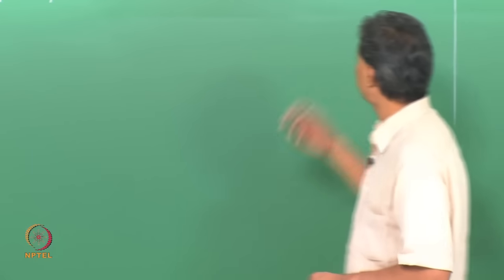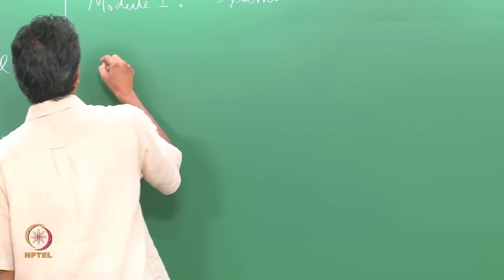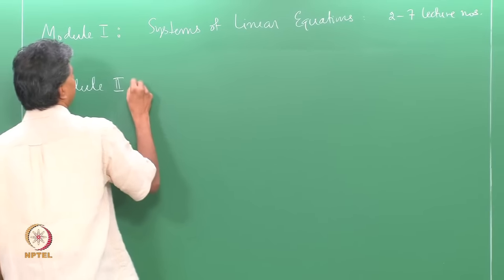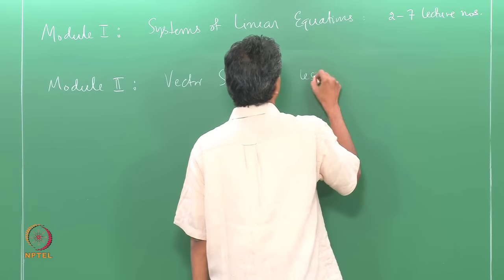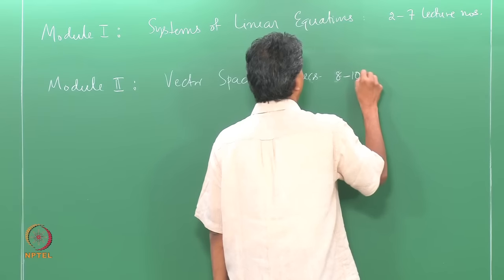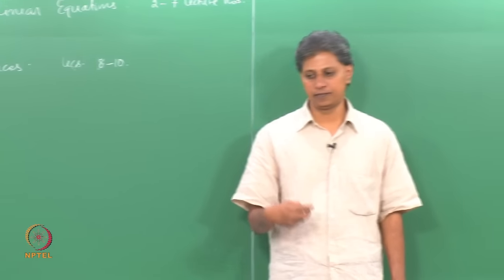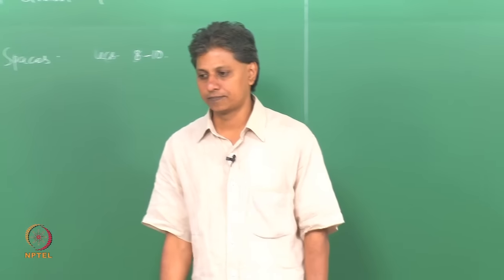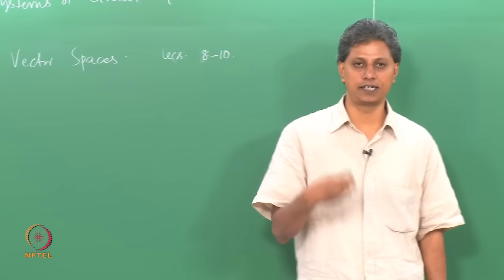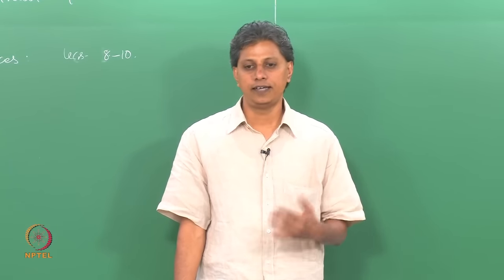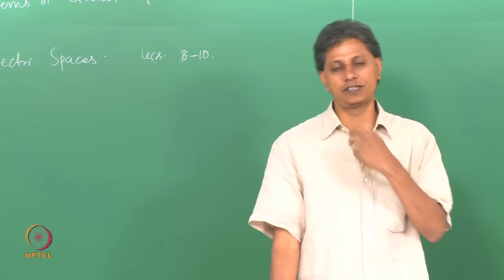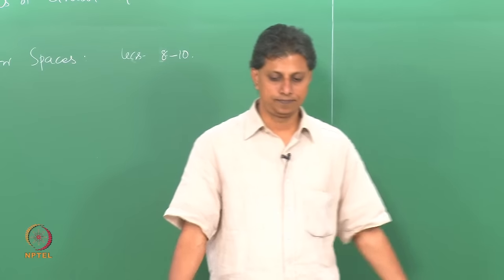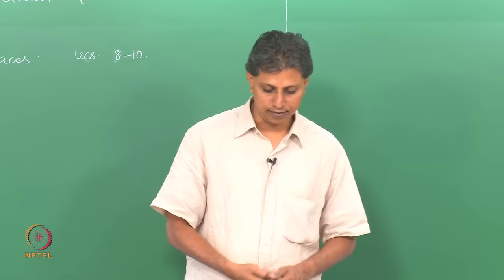In the next three lectures, lectures 8 to 10, we will discuss Module 2: Vector Spaces. This covers the axiomatic definition of a vector space, lots of examples, the notion of subspaces with further examples, spanning sets, and we will conclude this second module with the notion of linear independence of vectors and linearly independent subsets of vector spaces.